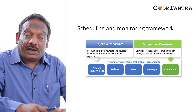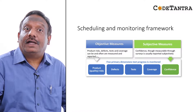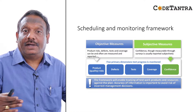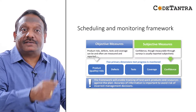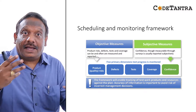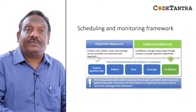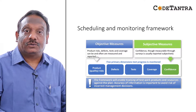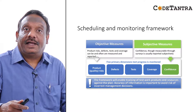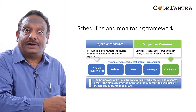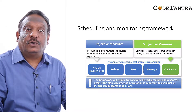The framework is important because it enables tracking of test work products and resources against the plan — plan versus actual measures can be established and compared. Accuracy of information is critical to avoid the risk of incorrect management decisions. That's why discussions with stakeholders are essential, and the framework must be established early in the life cycle, based on the overall business objectives of the project.